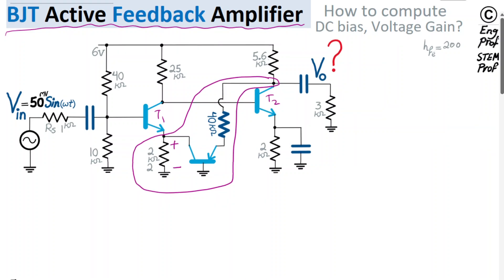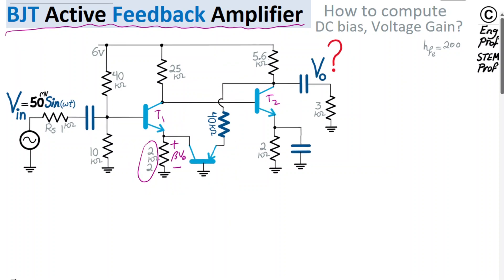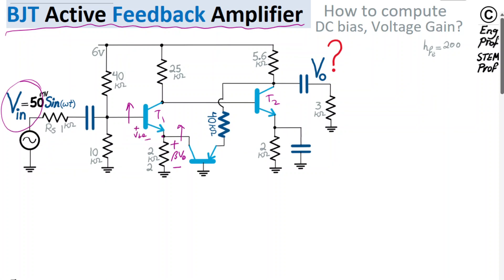Via this feedback network, it tries to apply an attenuated version — let's say beta·Vout, which is about 5–10% of Vout — across the 2 kΩ resistor. This voltage effectively tries to counteract what Vin is doing at the base. So if Vin is increasing the base, then beta·Vout is increasing the emitter, keeping Vbe roughly constant. It's a negative feedback that appears in series at the input: a voltage series feedback network.